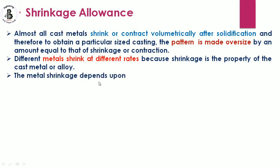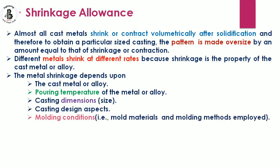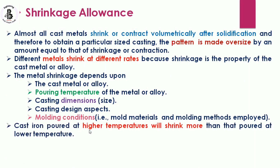Metal shrinkage depends upon: the cast metal or alloy; pouring temperature of the metal or alloy; casting dimensions or size; casting design aspects or complexity; and molding conditions — meaning the mold material, whether sand mold or metallic mold, and the molding method, whether manual or machine molding. For example, cast iron poured at higher temperatures will shrink more than that poured at a lower temperature.